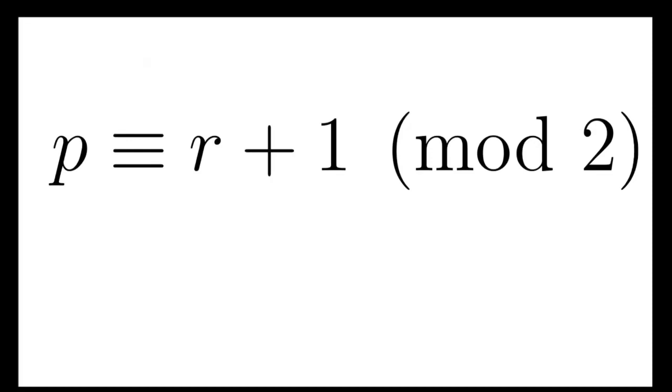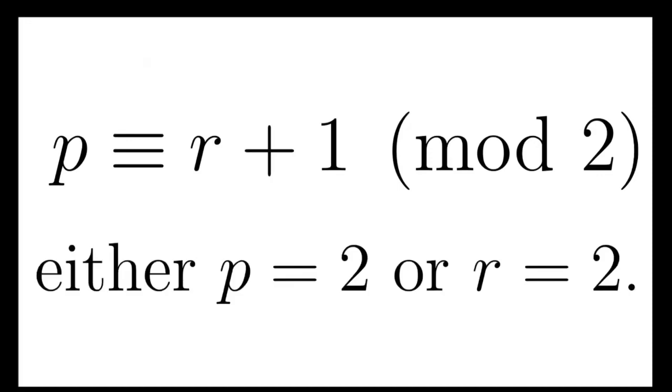So now I've got two cases. The first case being p equals 2, and the second case being r equals 2. This makes things much simpler.